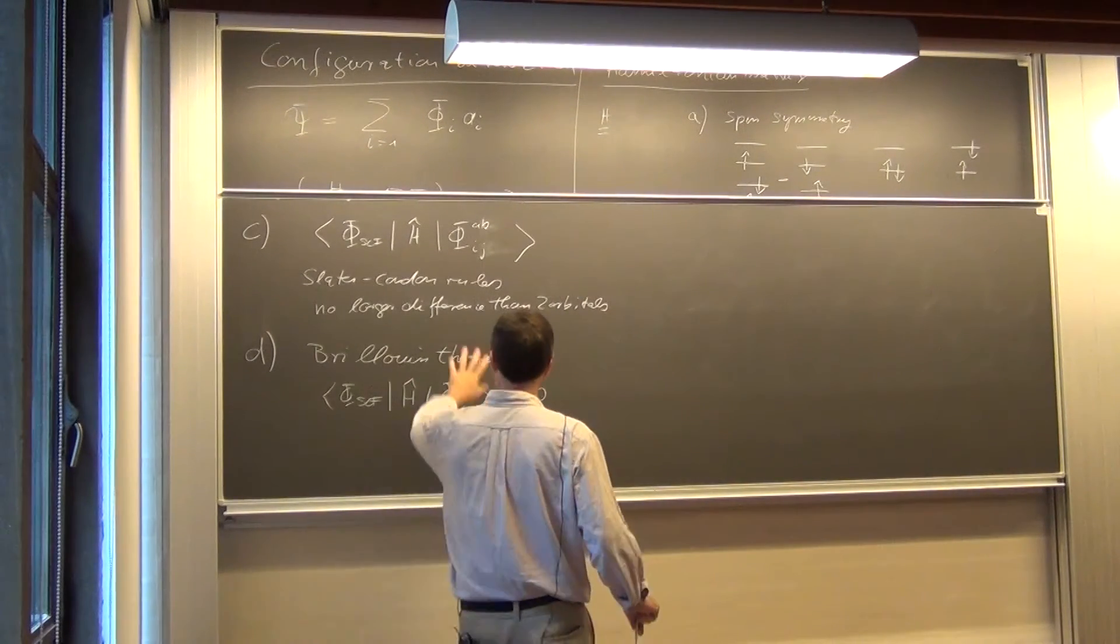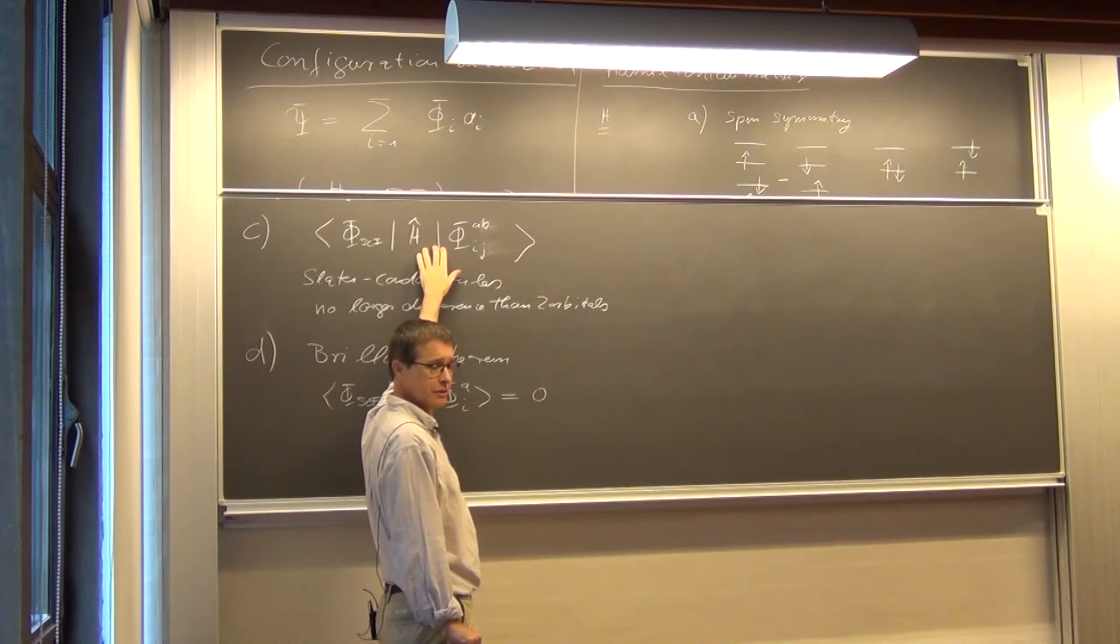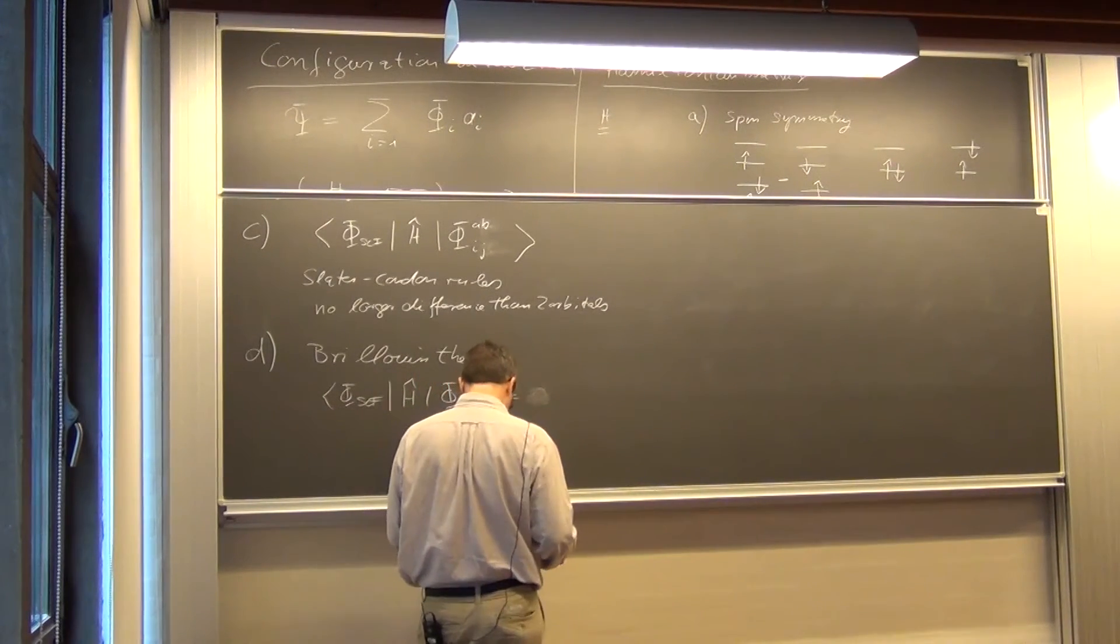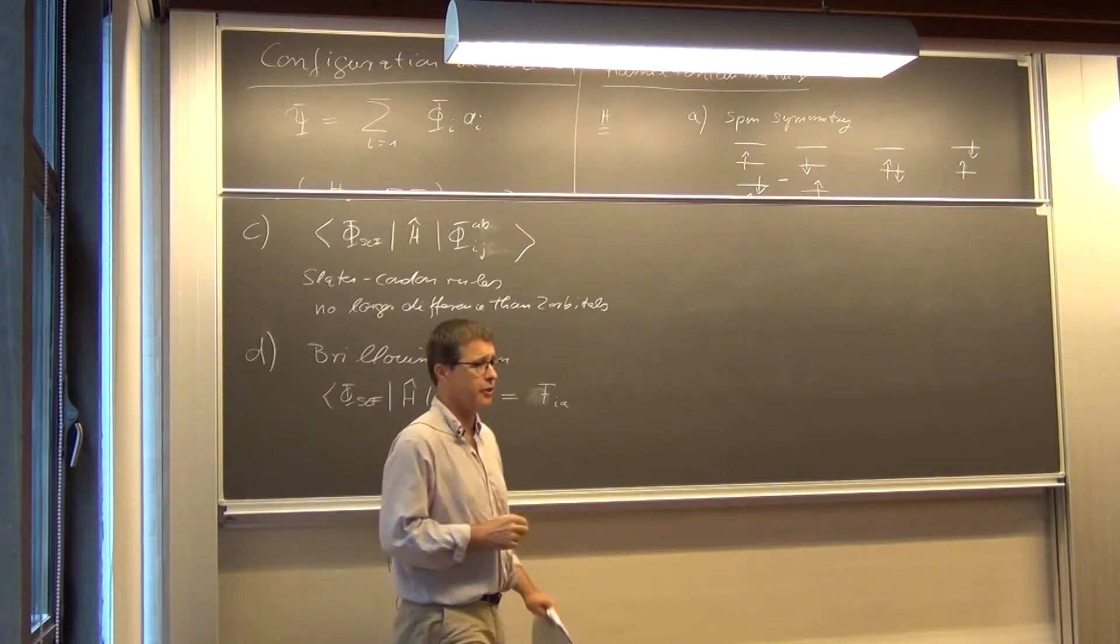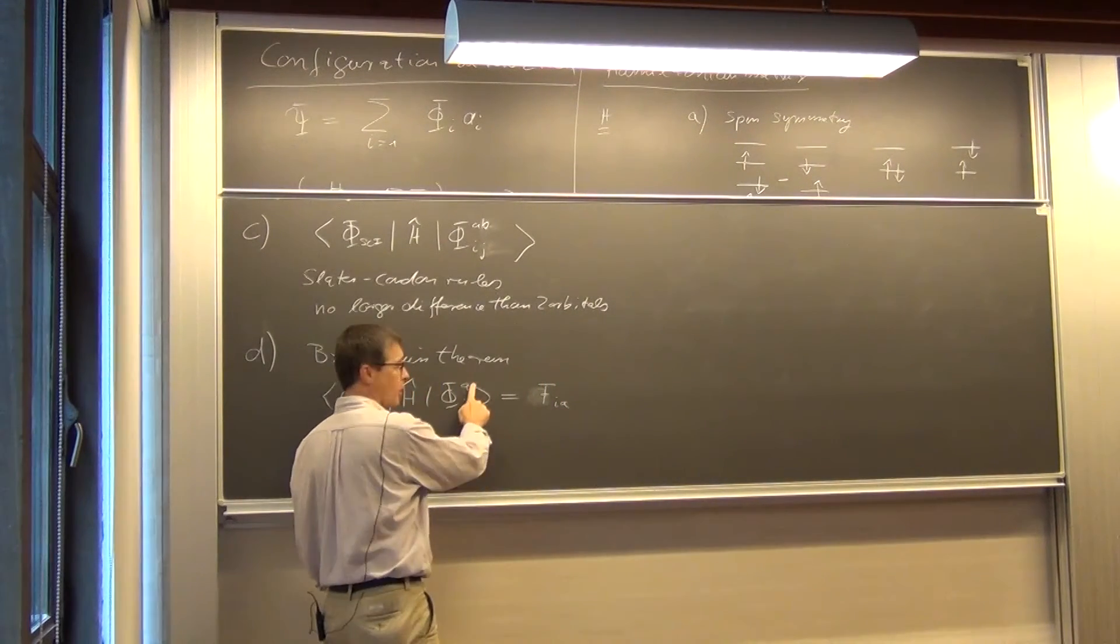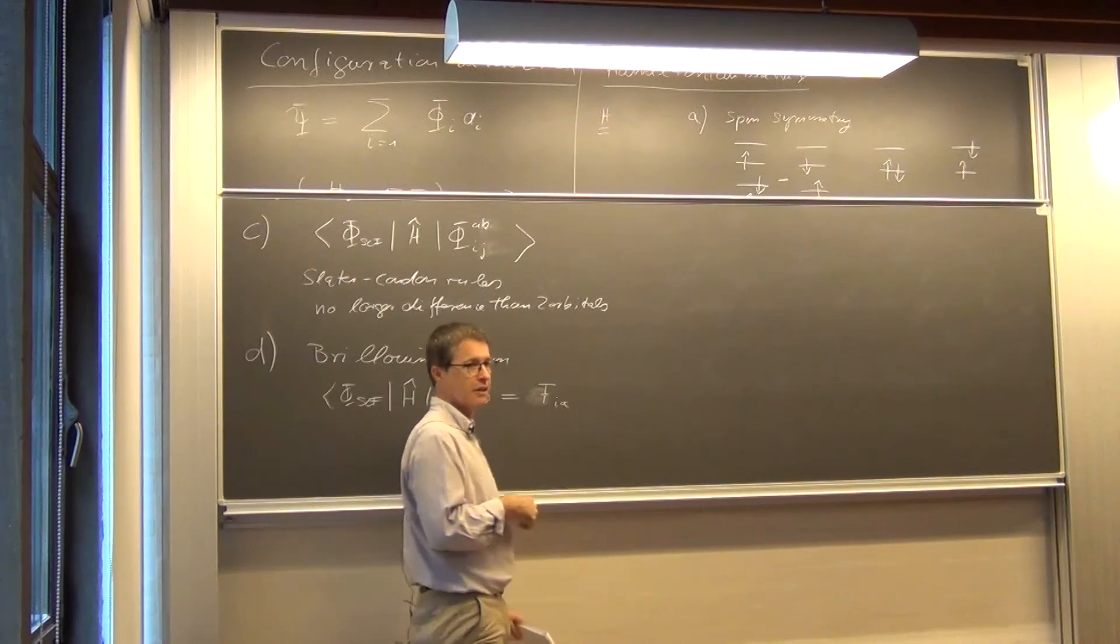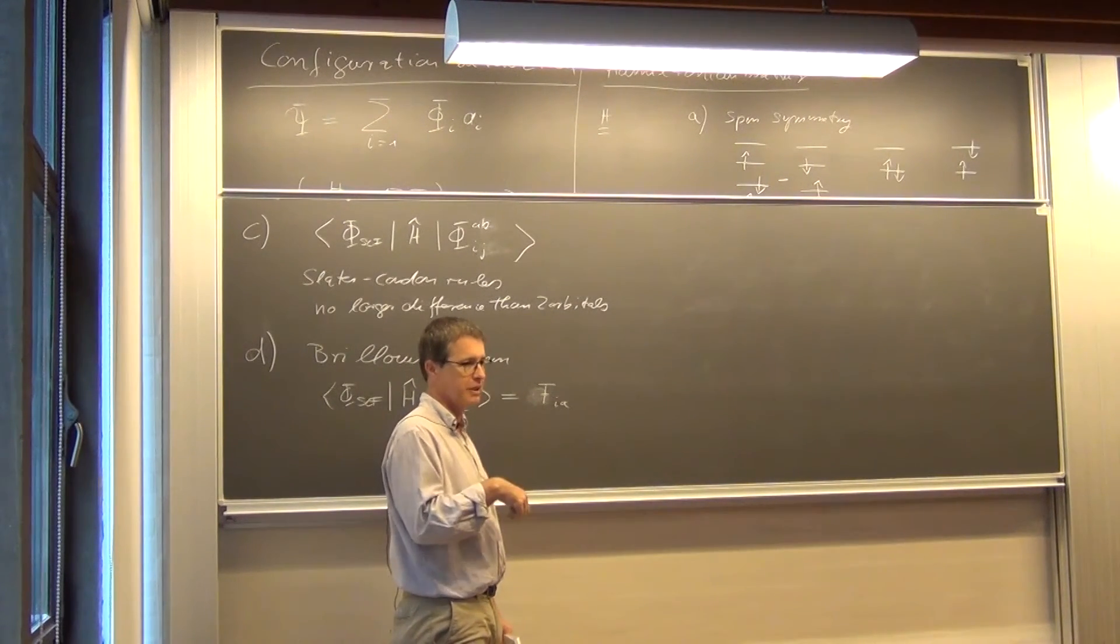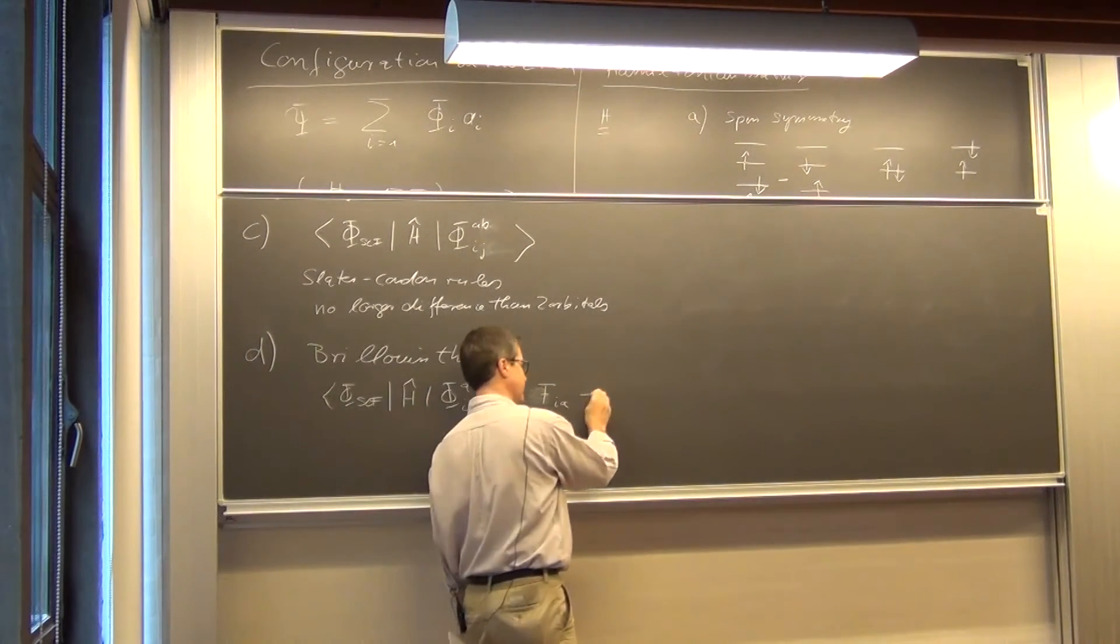It has nothing to do with that. It shouldn't be zero because of the Slater-Condon rules. But there's some extra thing, because if one calculates that, then it happens to be one element of the Fock operator. Precisely the one with the two orbitals here. But when we did a Hartree-Fock calculation, a Hartree-Fock calculation is diagonalizing the Fock matrix.